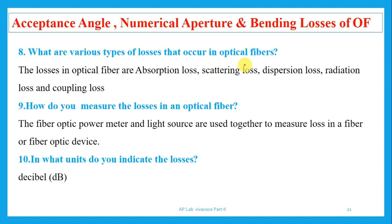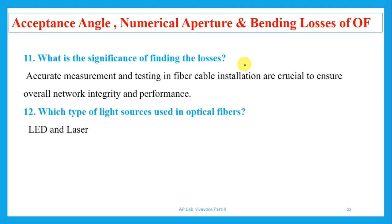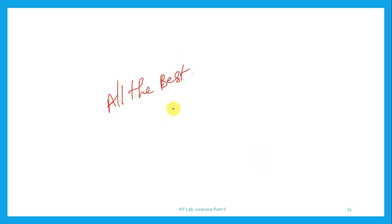How do you measure losses in optical fiber? Optical power meters and light sources are used together to measure loss in a fiber. In what units are losses indicated? Losses are indicated in decibels. What is the significance of finding losses? Unless we know how much signal is lost during transmission, it is difficult to set up a proper communication system. Wherever the signal gets weak, amplifiers are used to amplify it. By studying the losses, we can make proper arrangements to ensure our communication system works well. Which type of light sources are used in optical fibers? LEDs for multi-mode and lasers for single-mode. All the best — signing off, Dr. Shivanagiradi.